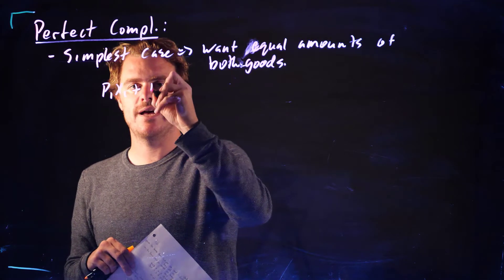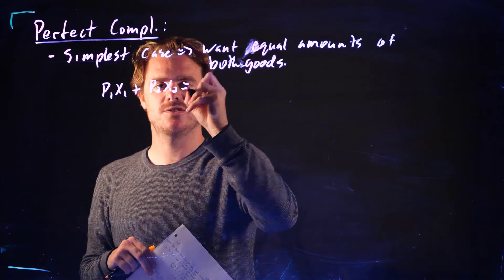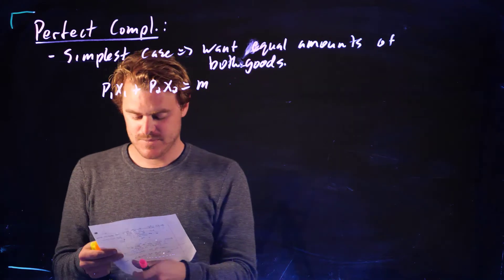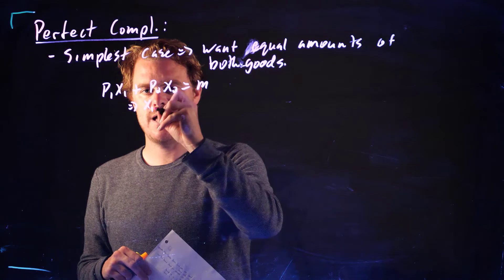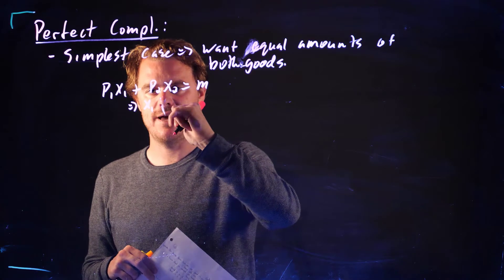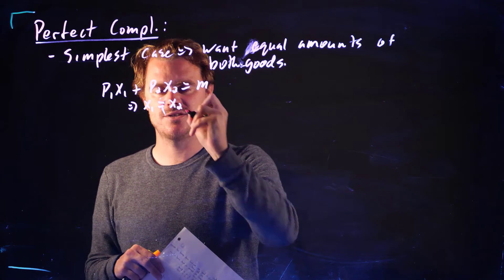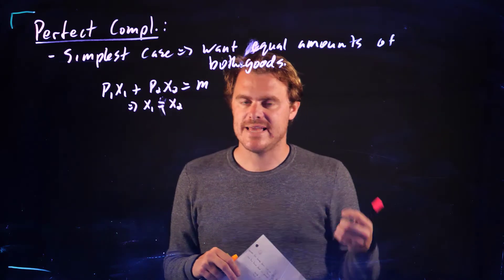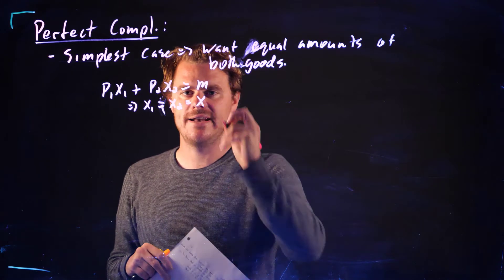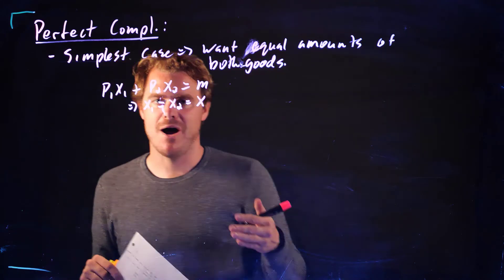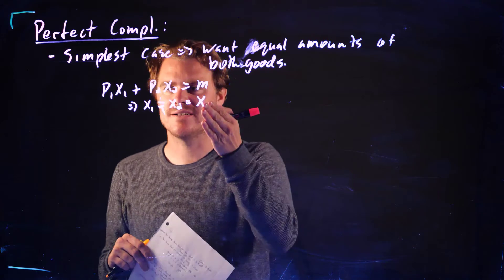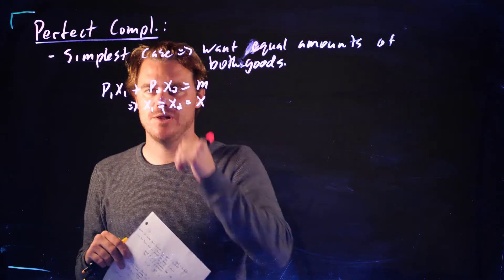And so if that's true, we have our budget line, P1 X1 plus P2 X2 equals M. But we know X1 equals X2 here, right? We have the same numbers. And so we can just call that X.